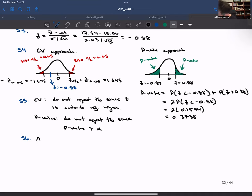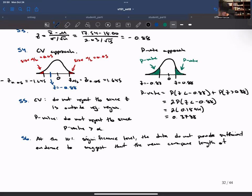And then on step six, I would say at the 10% significance level, the data do not provide sufficient evidence to suggest that the mean carapace length is different from 18 millimeters.